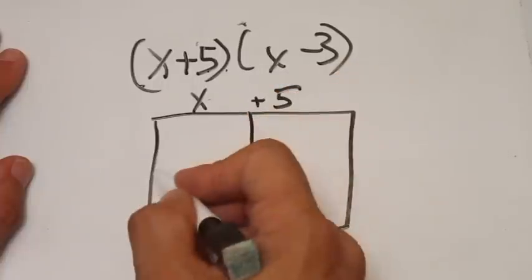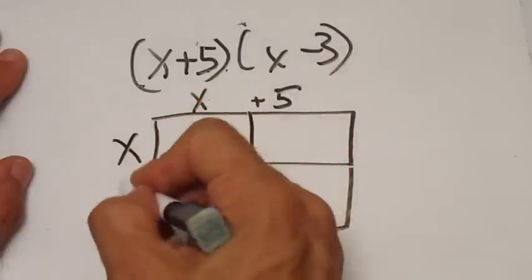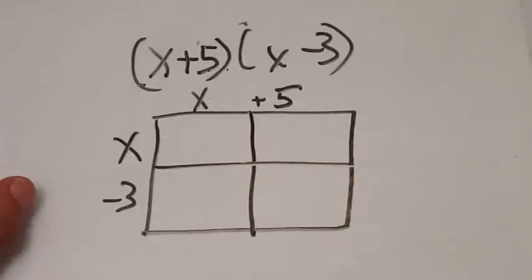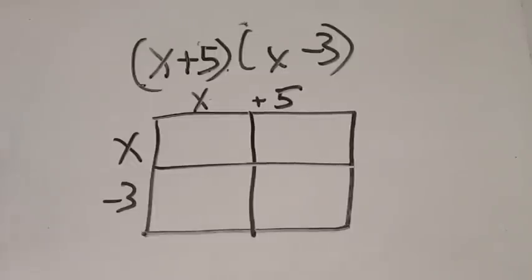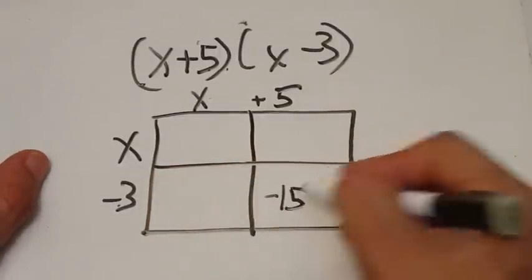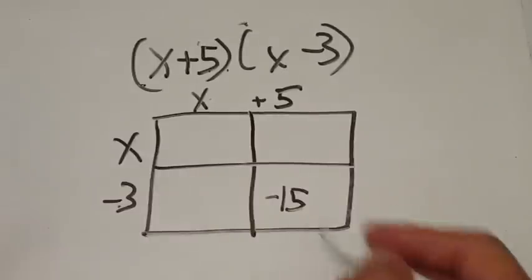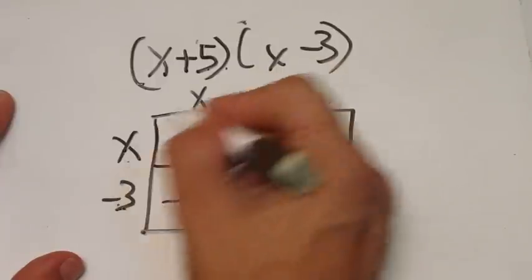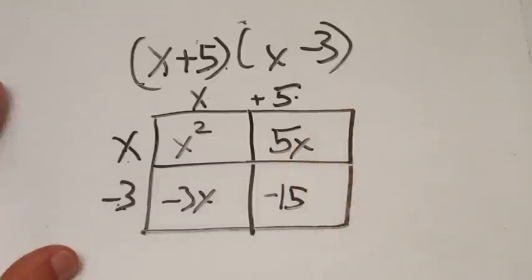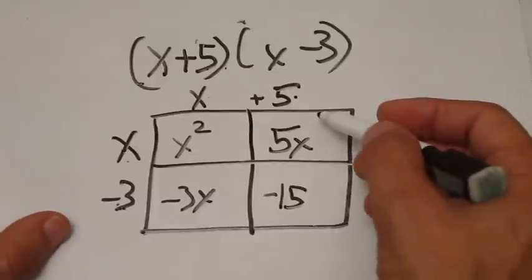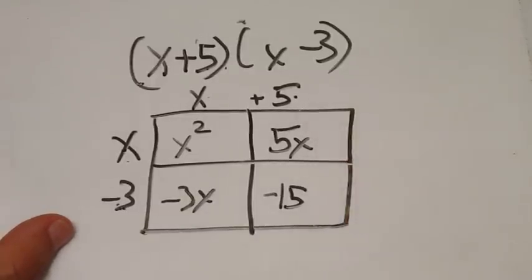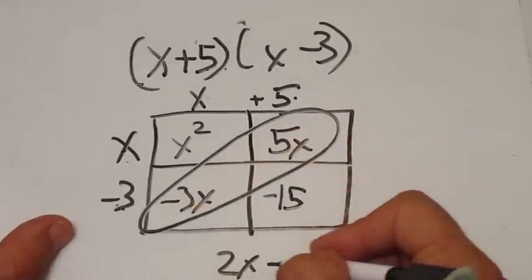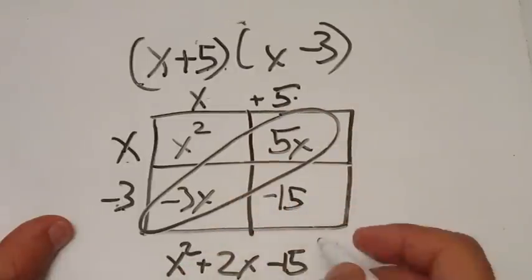You've got x and positive 5 along the top, then going down vertically, x minus 3. Think of this as the length of one side of the box and this as the length of the other side — what's inside gives you your answer. Fill in the boxes: negative 3 times 5 is negative 15, x times x is x squared, negative 3 times x is negative 3x, x times 5 is 5x. Notice that similar terms line up diagonally. Negative 3x plus 5x is 2x, giving you x squared plus 2x minus 15.